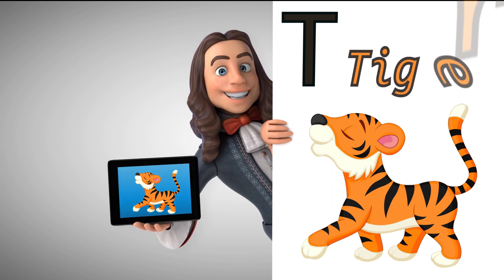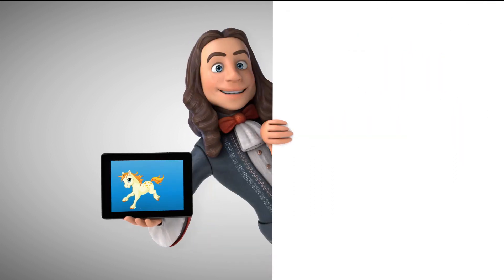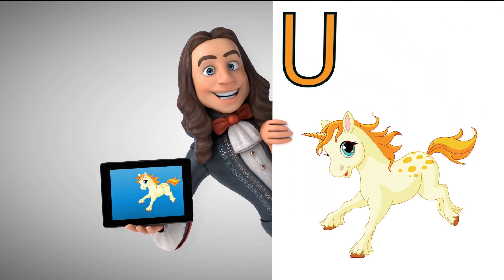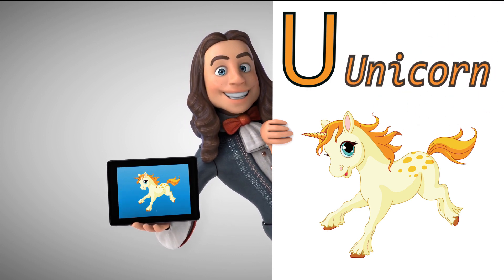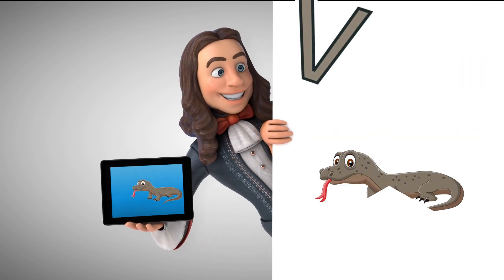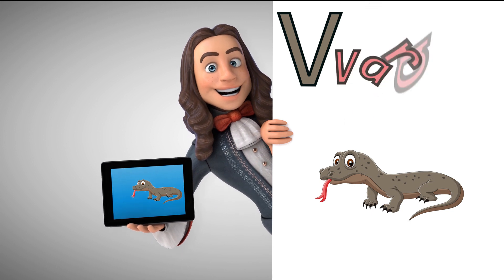T is for Tiger. U is for Unicorn. V is for Verona.